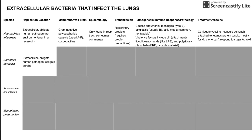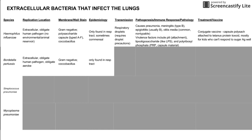Next we have Bordetella pertussis, another extracellular bacteria. This is another obligate human pathogen, and it's an obligate aerobe, which works out well because it's present in the respiratory tract. It's another gram-negative coccobacillus, and Bordetella pertussis is only found in the respiratory tract.